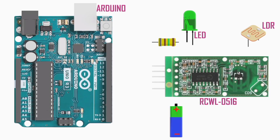We can also connect the sensor module to an Arduino. We'll wire the RCWL-0516 sensor to the Arduino board and connect an LED on pin 13 that will light up when motion is detected. Parts required include an Arduino UNO board, RCWL-0516 microwave radar sensor, light-dependent resistor, 220-ohm resistor, breadboard, and jumper wires.